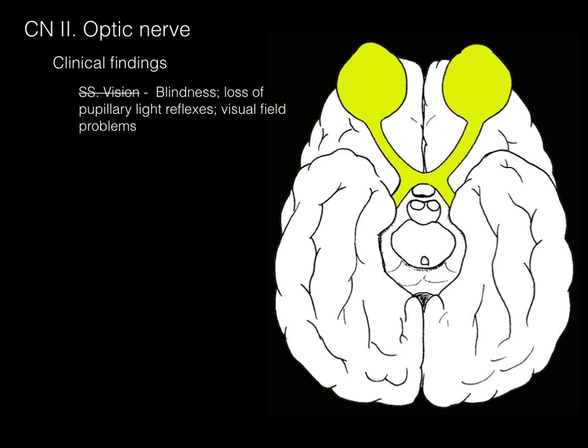If you knock out your optic nerve, the result is blindness. If you shine a light in the eye of a blind person, no sensory information can reach the brainstem to allow the pupil to constrict, so they lose the pupillary light reflex.